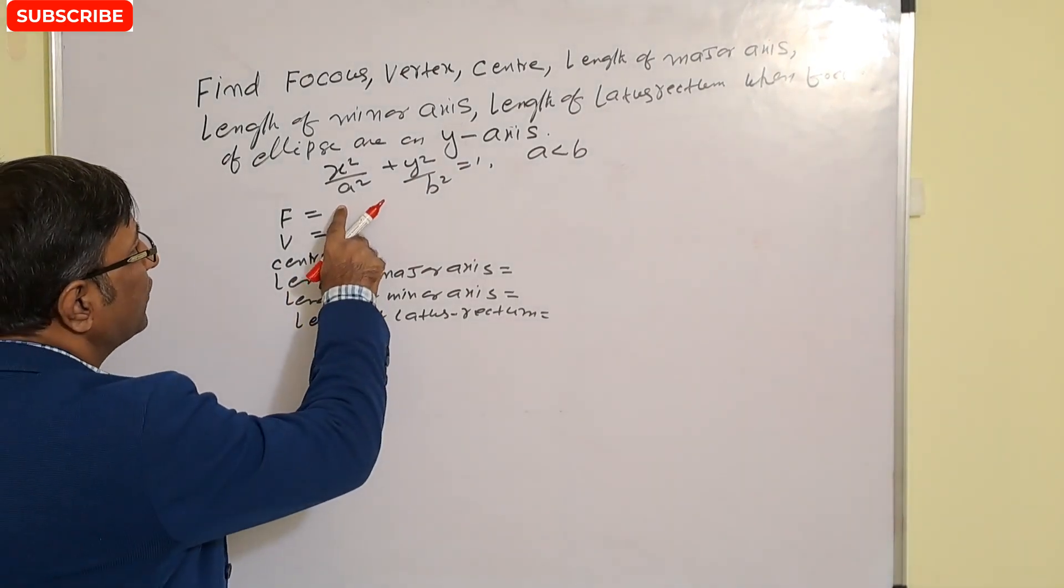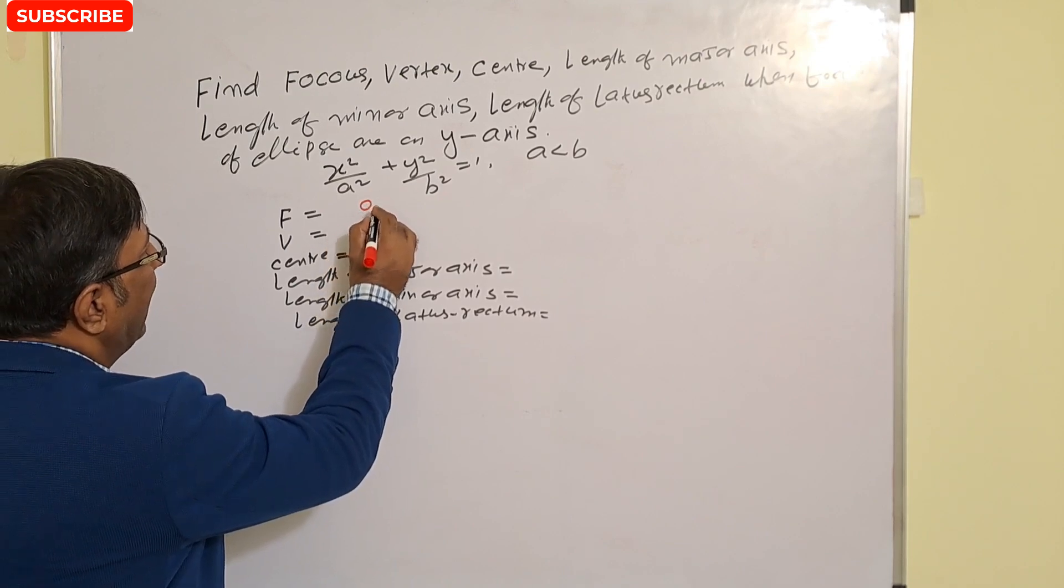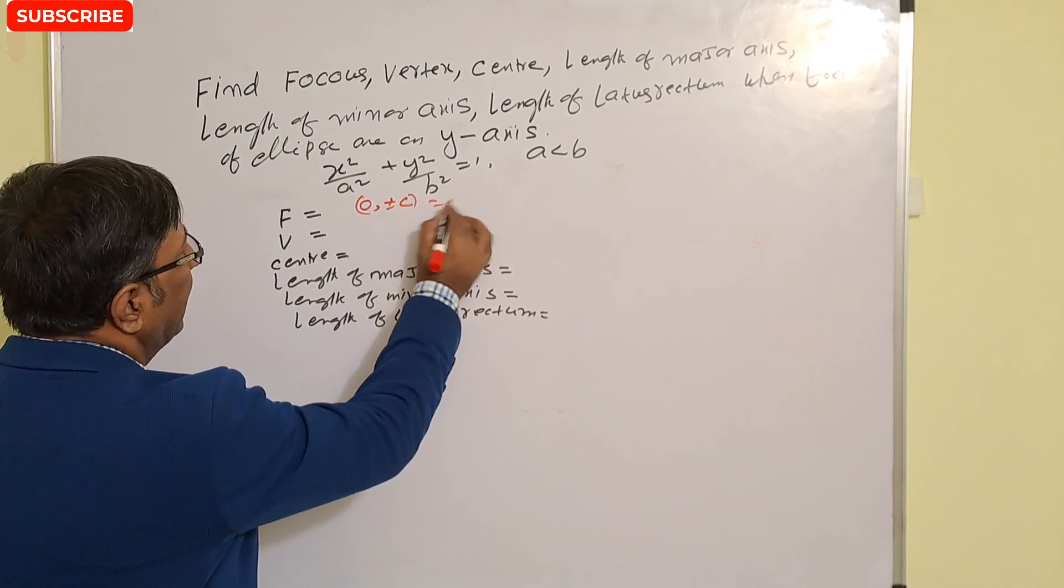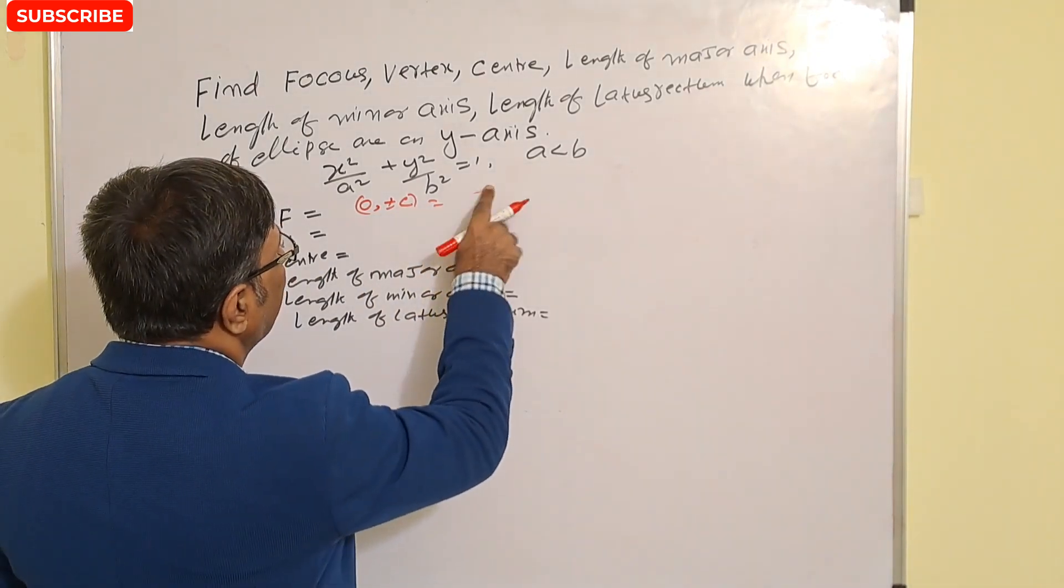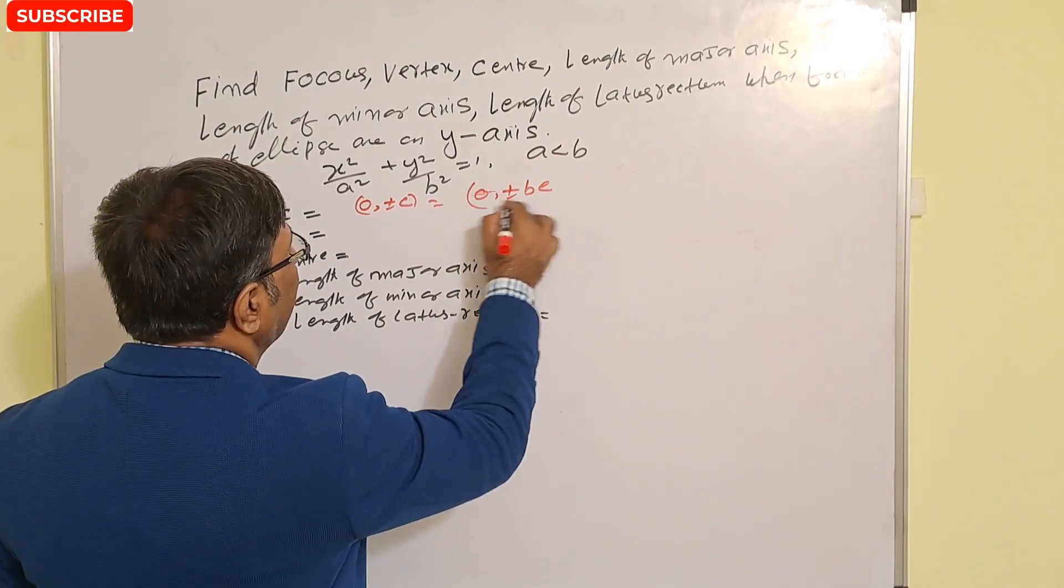So the focus will be what? On y-axis, x quantity is 0. So focus will be 0, plus minus c, which we can write as 0, plus minus be. That is 0 and plus minus be.